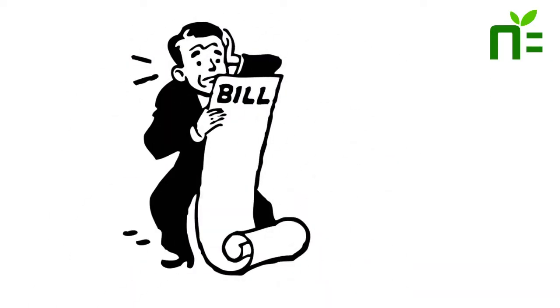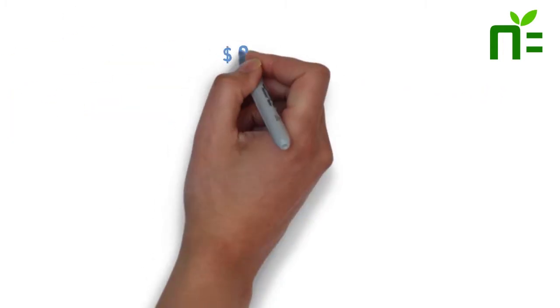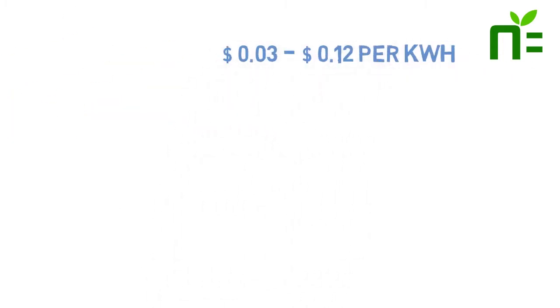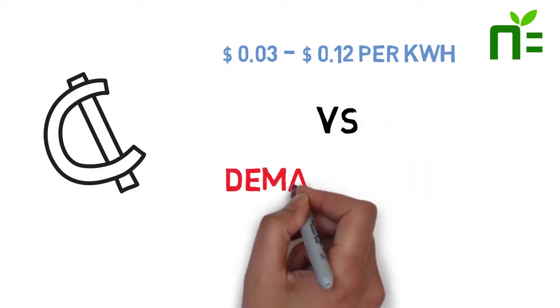You pay for energy, which is measured in kilowatt hours, somewhere between 3 and 12 cents per kilowatt hour. Then you get this other item called a demand charge.